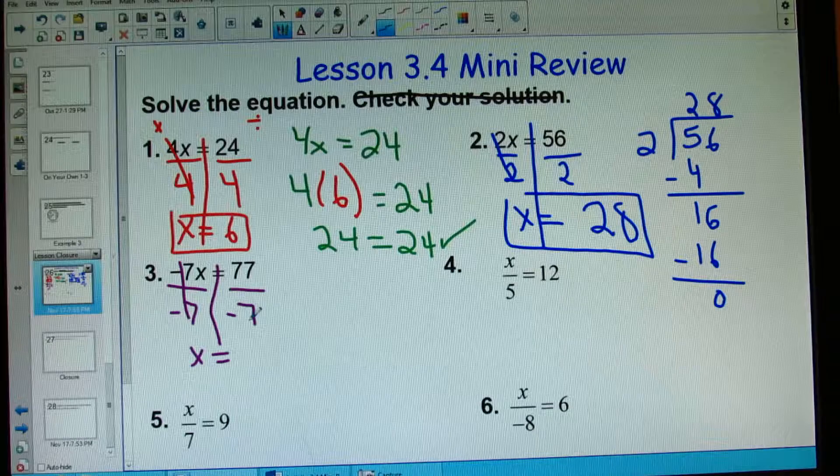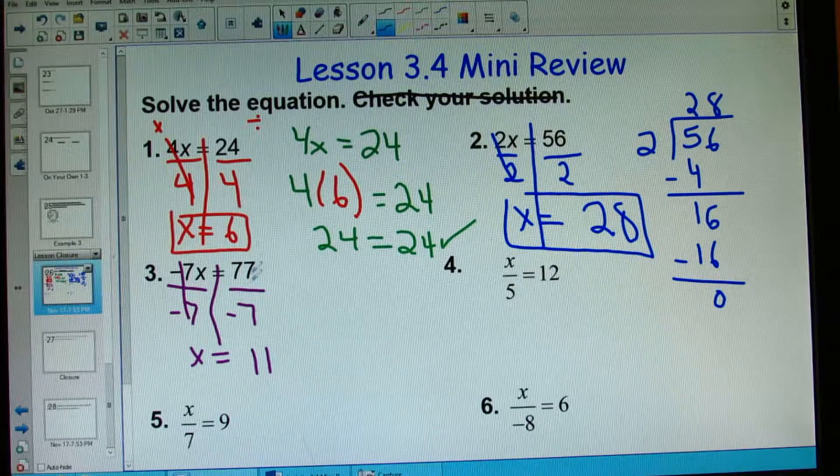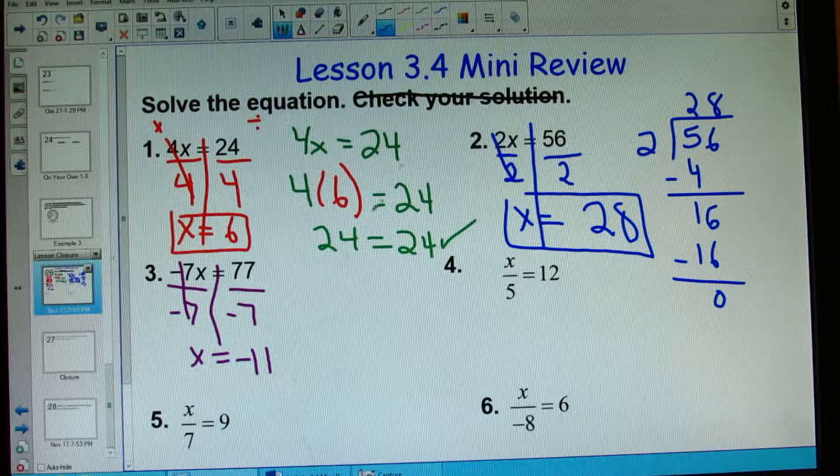I get x equals, this goes in exactly 11 times. And because these are different signs, my answer will be negative 11.